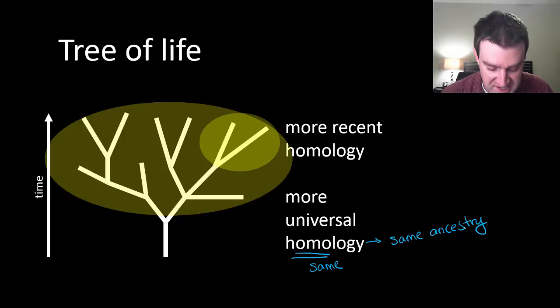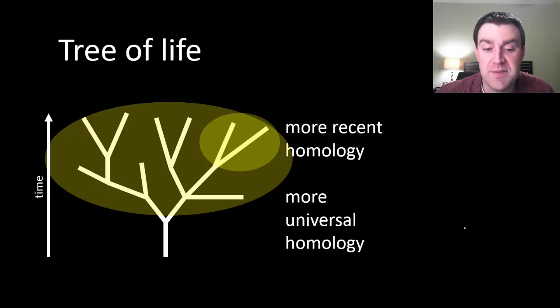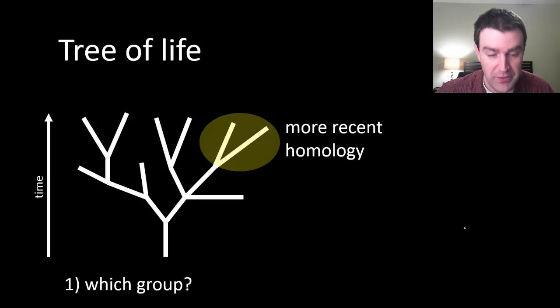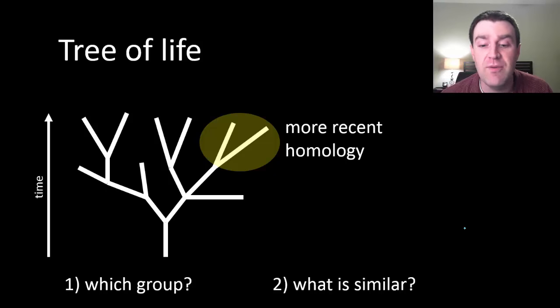And so when we discuss homologies I want you to be able to identify two things for me. I want you to be able to tell me which group shares that homology. So are you making a claim that this is just something that certain groups share? And if so which groups? Or is it everybody? And what is that similarity? Try to be very clear about what they share. And so let's go through some examples here and again we're going to encourage you to explore many more examples with class time.